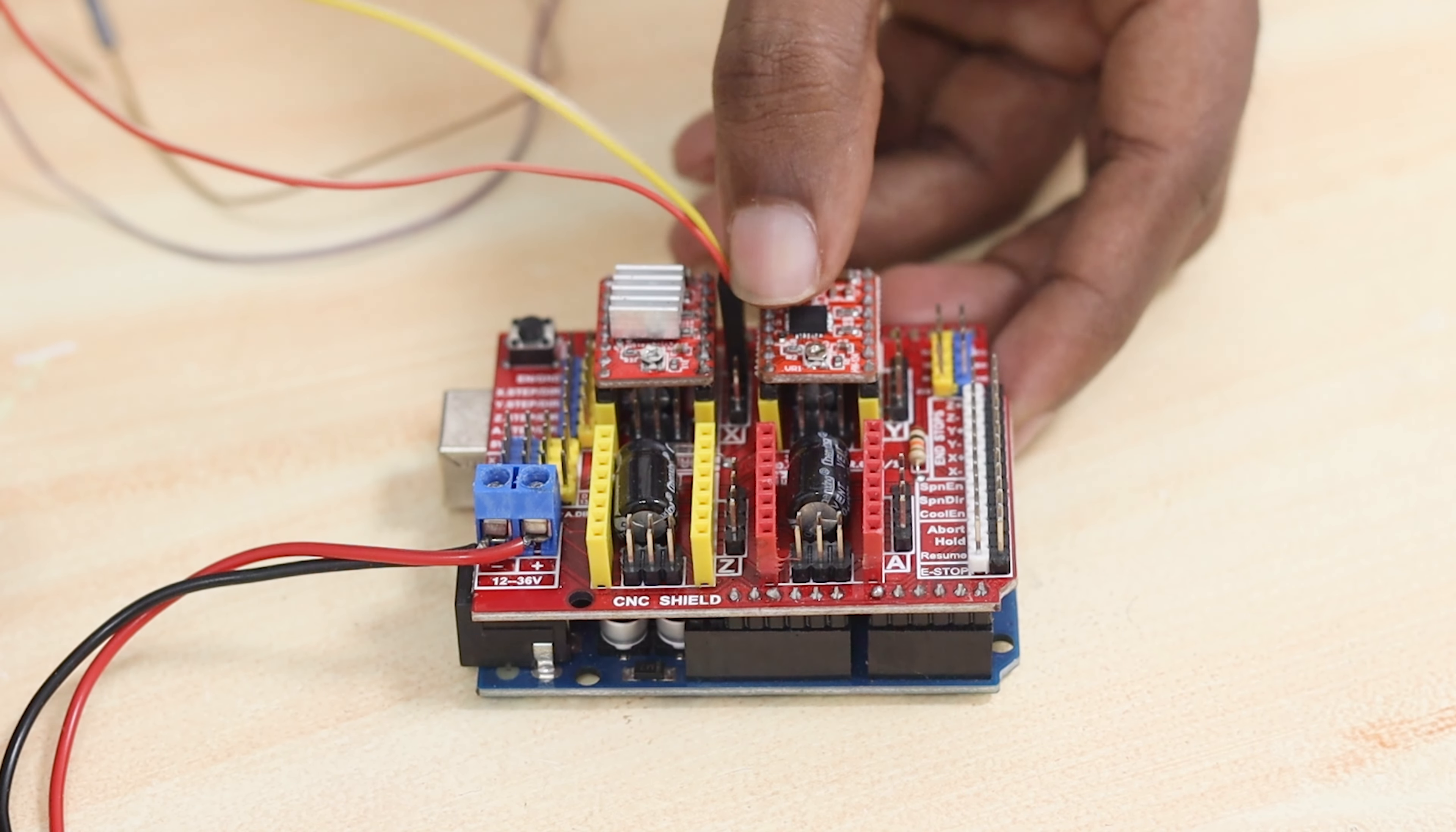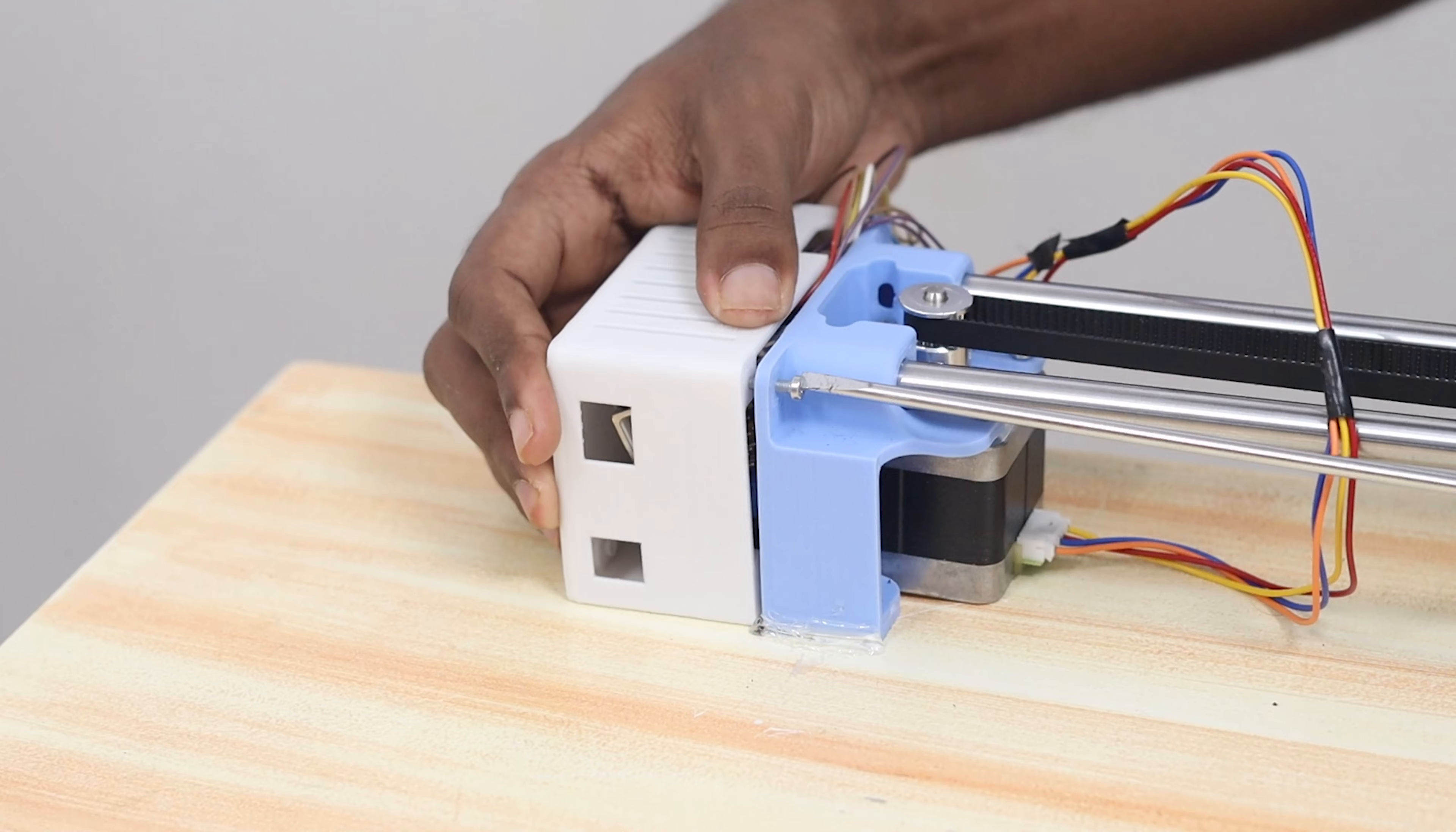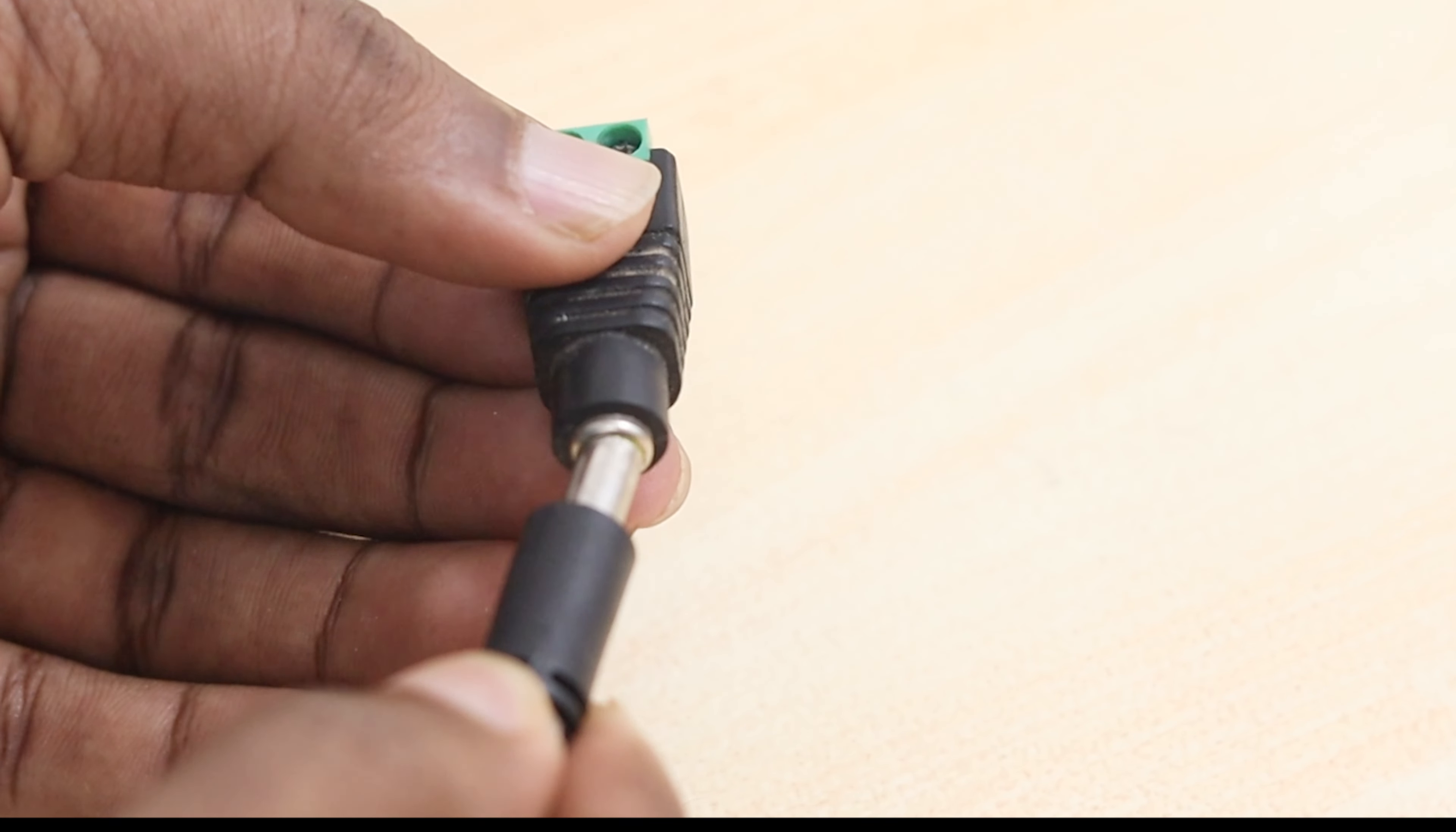First we connected the X axis motor and then Y motor and finally the servo. Then we secured all these things into the outer cover and screwed it to the motor. For powering up the whole system, we used a 12V 5A adapter. So that's all about the electronics.